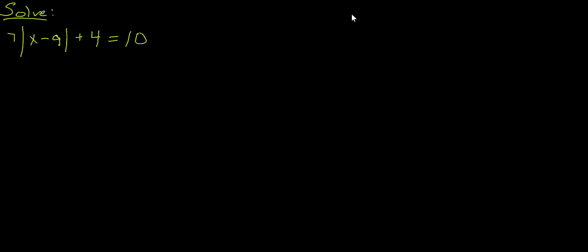So the strategy we want to use here is we want to get the absolute value sign all by itself and everything else over to the other side. So let's start moving things over, and the most loosely attached item is the plus 4.